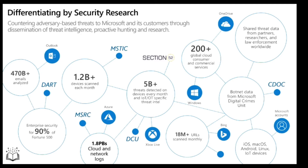We see more attacks than most other companies on any given day and get a lot of information from defending against those attacks. On top of that, we layer data from partners and researchers — part of our 3,500-plus people who are full-time on security — as well as law enforcement agencies we partner with worldwide through our Digital Crimes Unit. All of this intelligence makes up the Intelligence Security Graph, which is a graph because what's important is connecting these pieces of intelligence so signals are not just individual points of information. The graph brings them together so we can draw patterns across and learn from one point of data to influence how we interpret another.